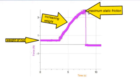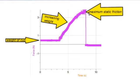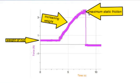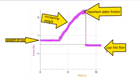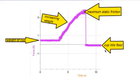This jerky region in here is what the force sensor read as it was sliding for a very brief moment. This is the maximum amount of static friction. And then the cup hit the ground, and the tension in the string went slack.